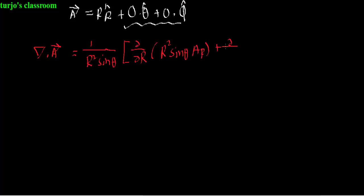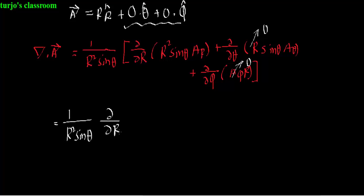Now from the given formula of the divergence, the expression will become just like this. Here h1, h2, and h3 are the three metric conversion coefficients, and if we multiply them together it will become r squared sine theta.